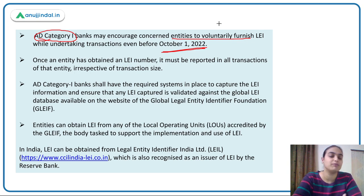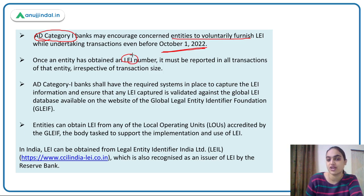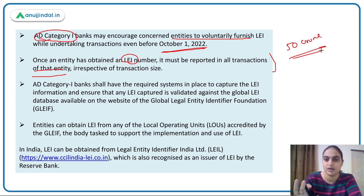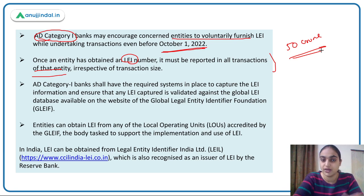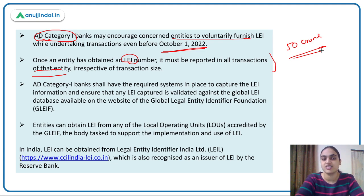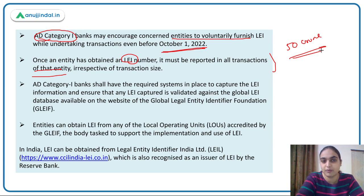Once an entity obtains the LEI number, it should provide the details to the AD Category 1 banks even before the actual implementation date of 1st October. Importantly, once an entity obtains this number, irrespective of the size of the transaction, it has to report the LEI in all transactions. Even if the transaction value is below 50 crore, you must mention your LEI number in every transaction.